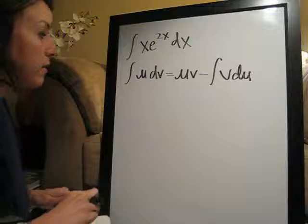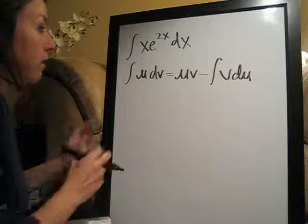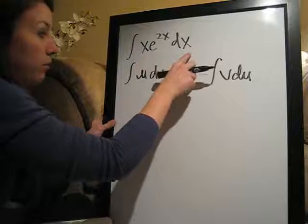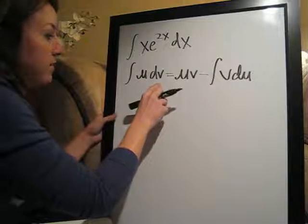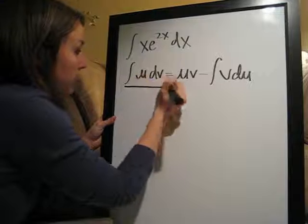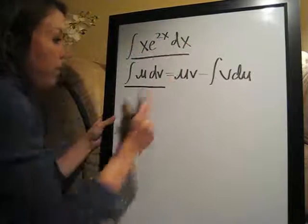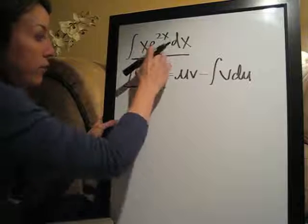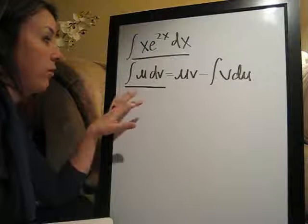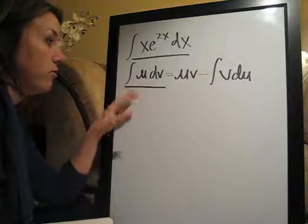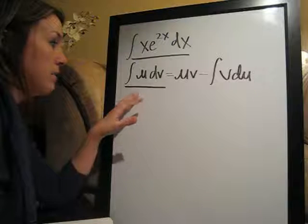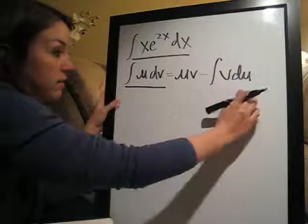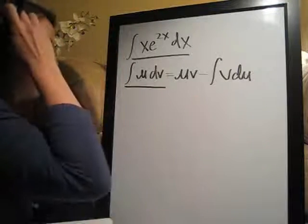And all that this means is that we are going to pull out from this equation, our original problem, u and dv elements. This part of the formula mirrors our problem. So we're going to find u and dv in this formula, and then from u and dv, derive du and v, the four different components, plug back into this half of the formula and solve the problem.